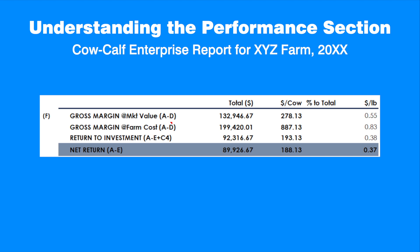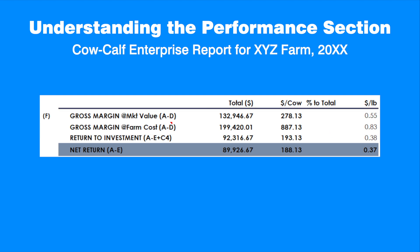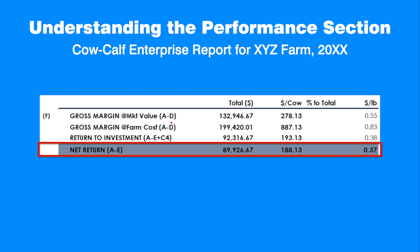Let's look at the resulting economic efficiency measures in terms of gross margin and net return, and compare them with the AgriProfit's benchmarks. Gross margin is the amount left from revenue after accounting for all cash costs. The report expresses the gross margin in terms of market value and farm cost. Gross margin at farm cost adjusts for feed that is homegrown. In this example, the enterprise generates $278.13 per cow, available to cover depreciation costs, pay principal payments, and for owner's withdrawals.